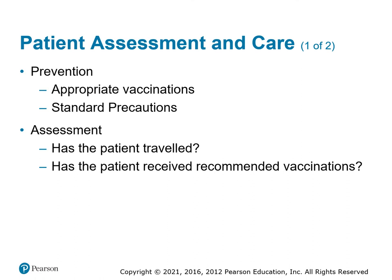Step one with communicable diseases: prevent. Use standard precautions and wear the appropriate PPE. Believe that every single person around you has a communicable disease and protect yourself from it. Get appropriate vaccinations if one exists. For assessment, ask if the patient has traveled — many diseases come from different regions of the planet and different environments. Ask if the patient has received recommended vaccinations. When you encounter patients with a fever, vague symptoms, or an ill-defined complaint, ask where they've traveled in the previous several weeks and if they've received any recommended vaccinations.